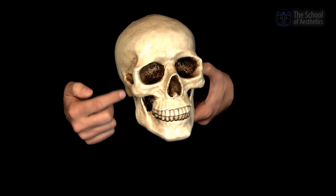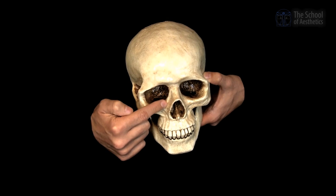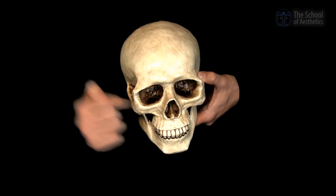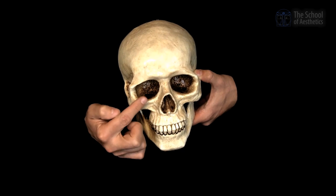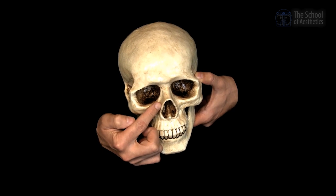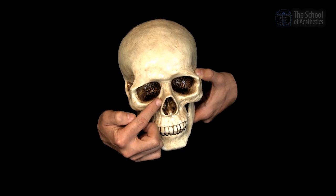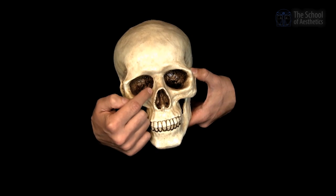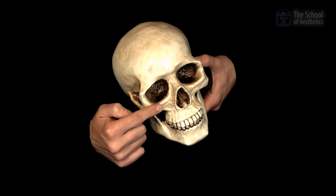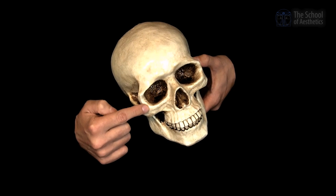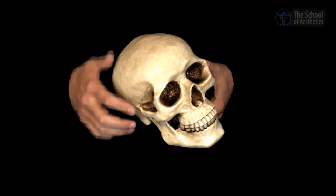In some cases when we have to replace volume at the tear trough, we know that medially speaking, in the inferior orbital rim we have the maxilla, and laterally we have the zygomatic bone.